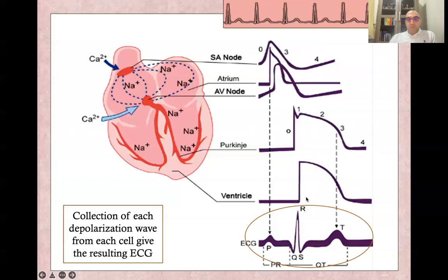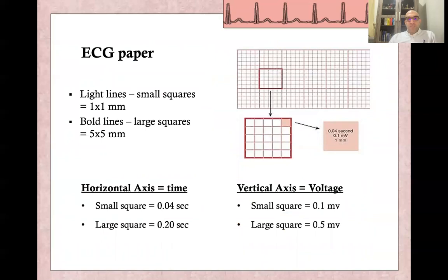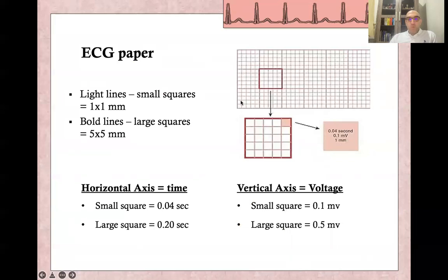Each wave represents a specific electrical event: the P wave represents atrial depolarization, the QRS complex represents ventricular depolarization, and the T wave represents ventricular repolarization. The ECG is printed on ECG paper consisting of small and large squares. Each large square contains five small squares horizontally and five vertically. On the horizontal axis, each small square represents 0.04 seconds (40 ms) and each large square represents 0.2 seconds (200 ms). On the vertical axis, each small square represents 0.1 mV, and two large squares represent 1 mV.